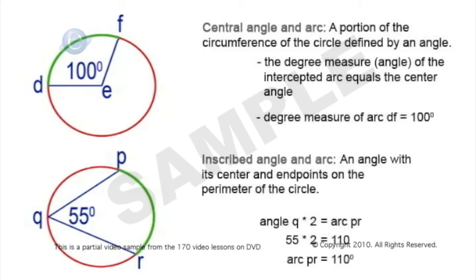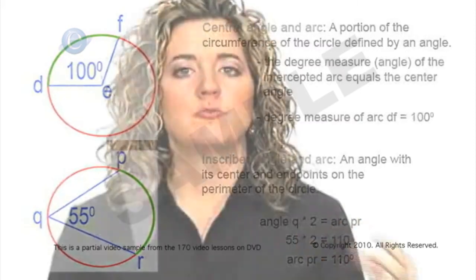An arc is simply a portion of a circle. We can create it two ways: from an angle at the center of a circle, or from an angle on the far side of the circle. With a center angle, whatever that angle measure is, that's how long the arc is. If we create it from the other side, we double that angle measure to find how long the arc is.